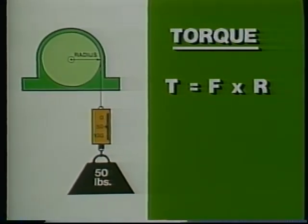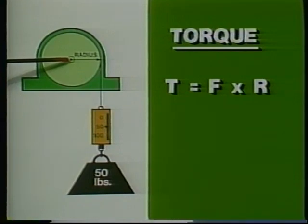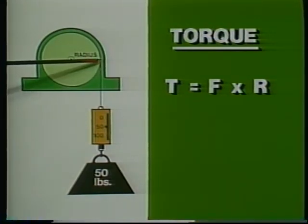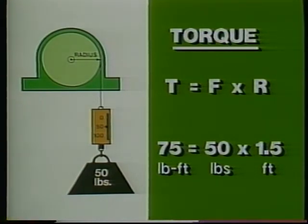The torque a motor produces is measured by multiplying the amount of force it will exert times the distance between the center of the shaft and the point where the force is being applied — in this case, the rim of the winch. If the winch drum is three feet in diameter, its radius is one and a half feet, so the motor must exert 75 pound-feet of torque to raise the load.